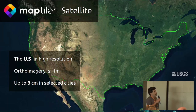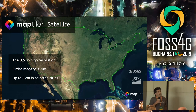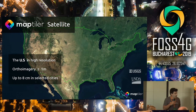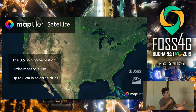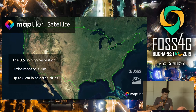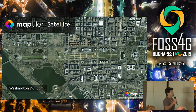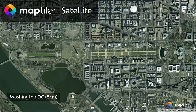Since a few weeks ago, we released the whole United States in higher resolution using aerial imagery from USGS and USDA. This is basically one meter resolution, but also up to eight centimeters in resolution in selected cities, giving users a much better experience and the ability to zoom much more into MapTiler Satellite. For example, you can see a screenshot from Washington DC at eight centimeters — you can view this online at MapTiler.com.